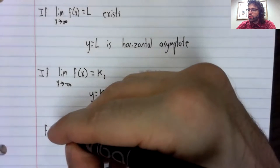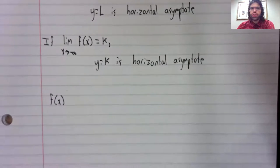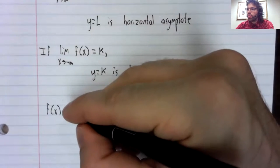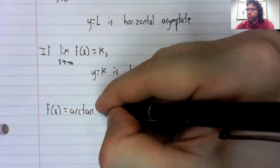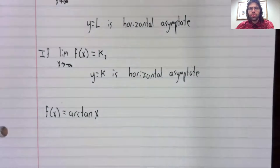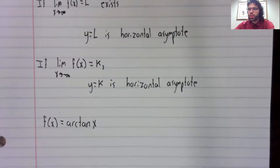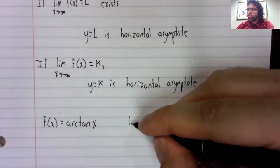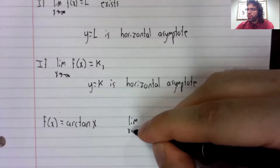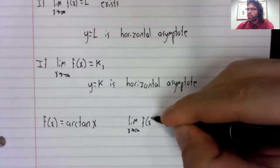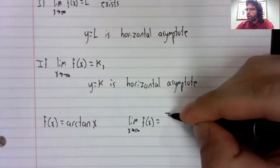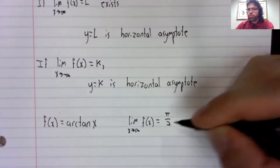Going back to our introductory example, we looked at the arc tangent, and the limit as X approached infinity was pi over two.